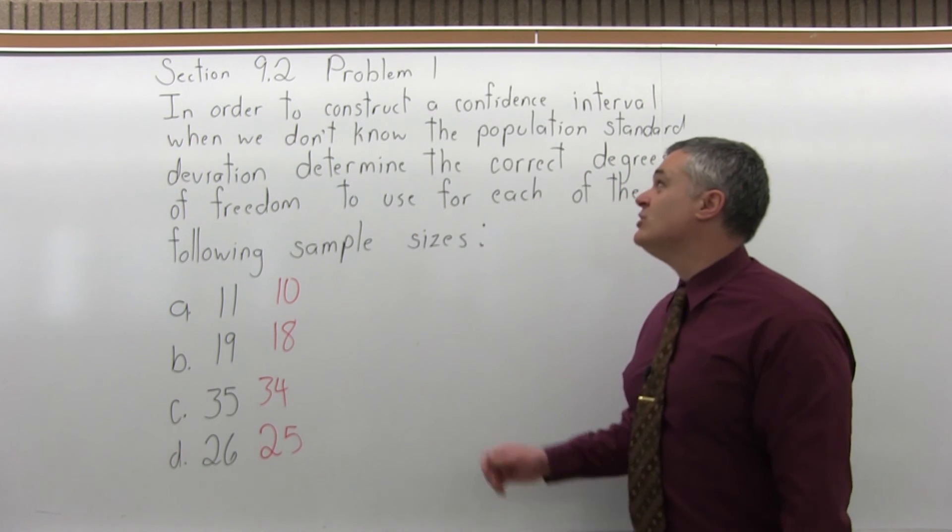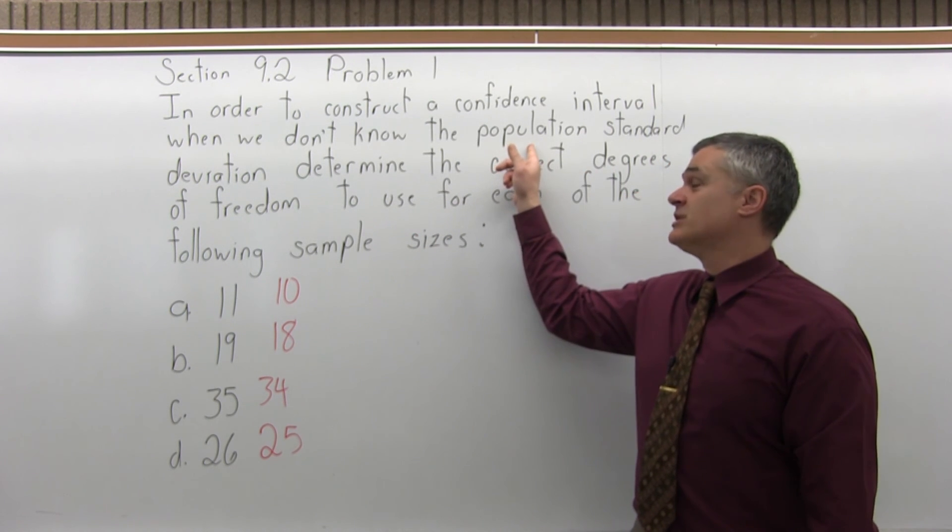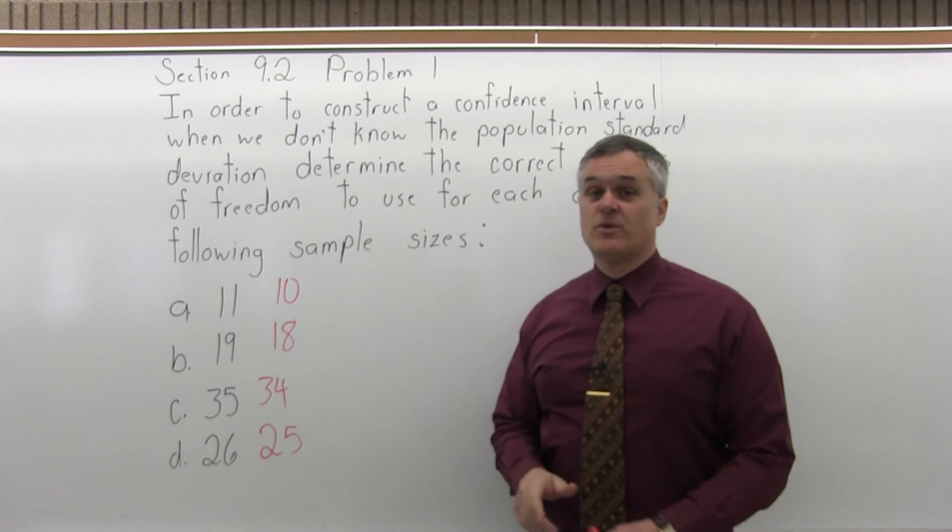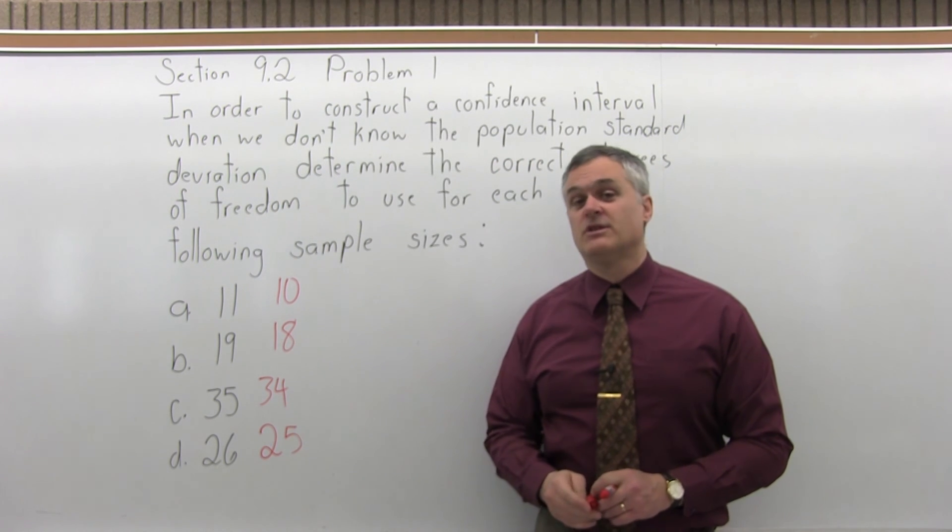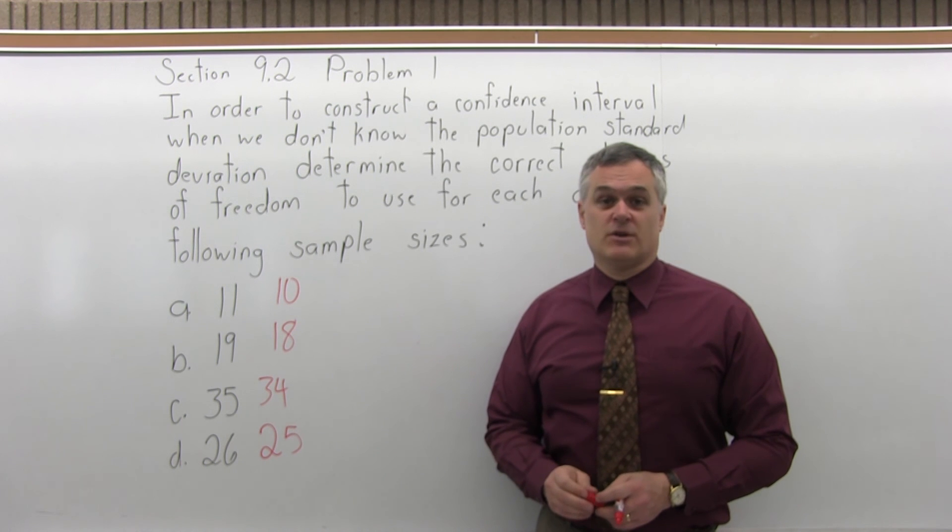And again, this is the system we use if we do not know the population standard deviation when we make a confidence interval. If we know the population standard deviation, you don't need to figure out degrees of freedom.